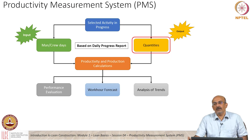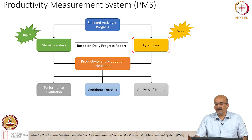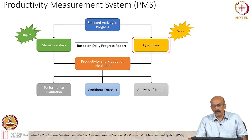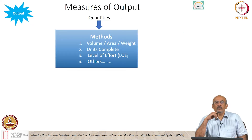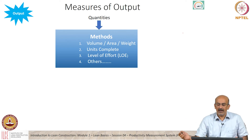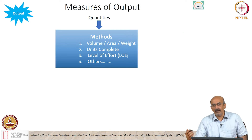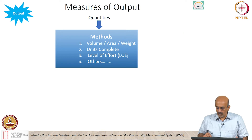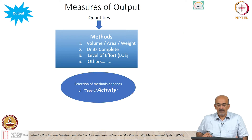Next we look at the output side, which is quantities. Calculating quantities of work seems simple, but has its own complexities. There are different methods to calculate outputs — volume, area, weight, units complete, level of effort — and the choice depends on the type of activity.